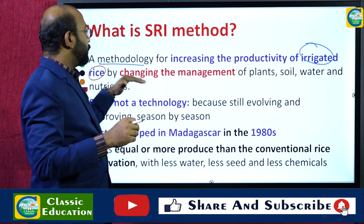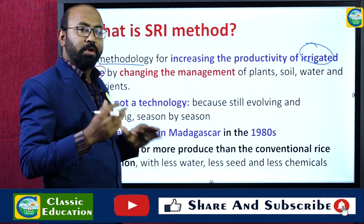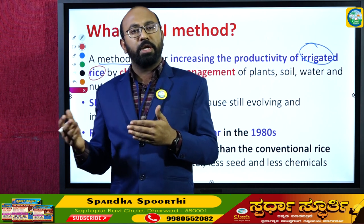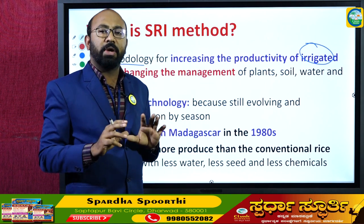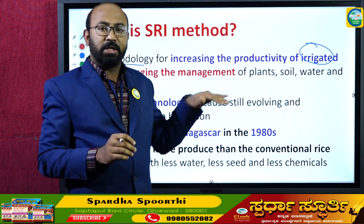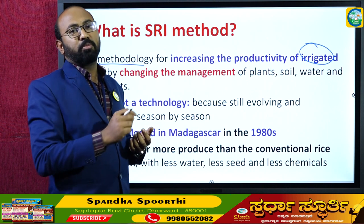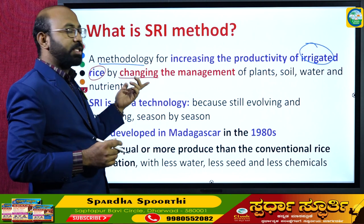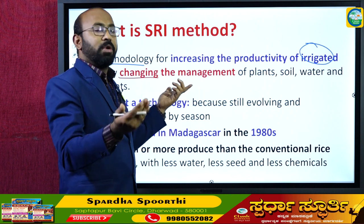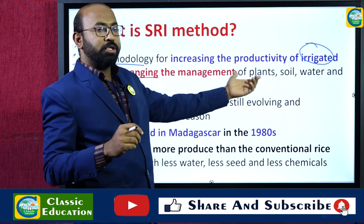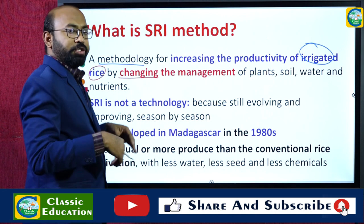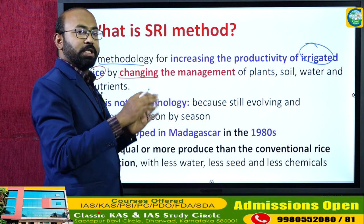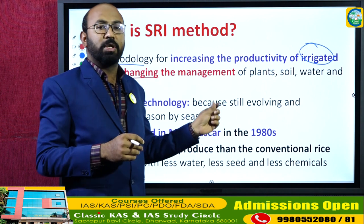SRI is a method involving changes in the management of plants, soil, water, and nutrients. In the traditional method, farmers provide nutrients, water, and use high-yielding varieties. But SRI involves modifications to the traditional method — changes to plant population, water management, soil management, and the amount of nutrient application. It changes the way we traditionally approach rice cultivation.